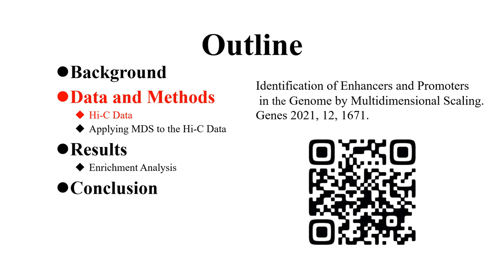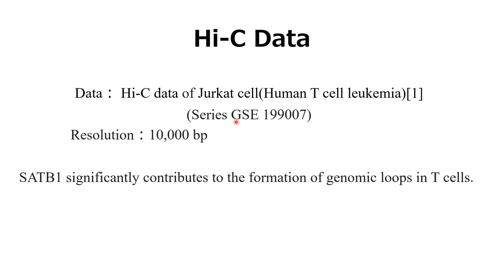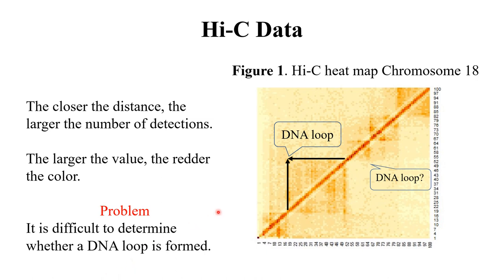Next, data and method. Regarding Hi-C data: in this study, we used Hi-C data of Jurkat cells. This study indicated that SATB1 significantly contributes to the formation of genomic loops in T cells. Next, I explain about the Hi-C heatmap. Areas with high probability of contact detected by the Hi-C method are shown in red. So, this square region is considered to form a DNA loop. However, it is difficult to determine whether a DNA loop is formed in some ambiguous squares.